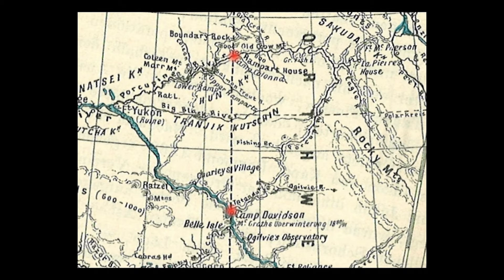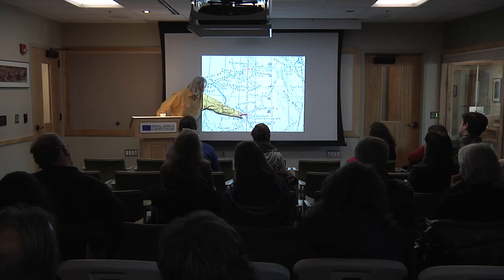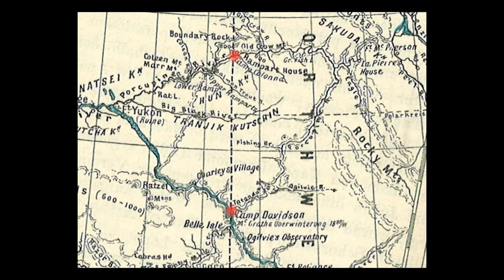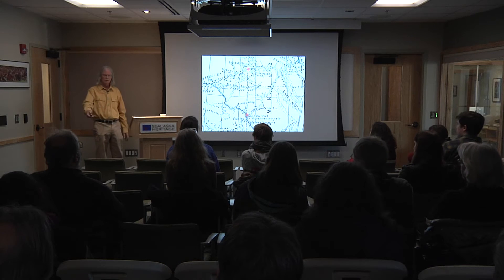The Americans set up two camps, and they overwintered for two years each. The first one was at Camp Davidson, named for George Davidson on the Yukon. The other one was up above the Arctic Circle on the Porcupine River, named for Benjamin Colonna — who was a well-beloved second-in-command of the Coast Survey. He had been crippled during field work, so he could no longer do field work, and so he ran everything in the office.